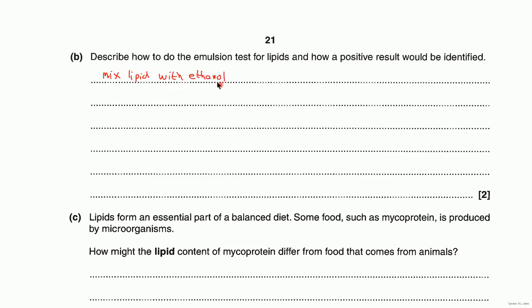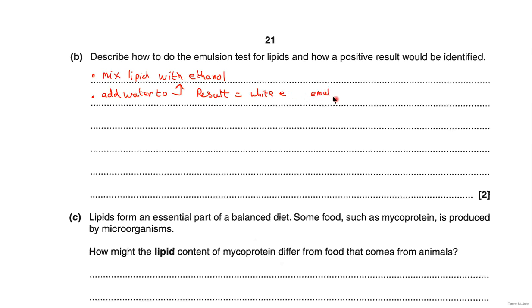The lipid will actually dissolve in the ethanol and it should go pretty clear. The second step is that to your lipid-ethanol mixture you add water. The result is a white emulsion — it goes white, very much like milk.